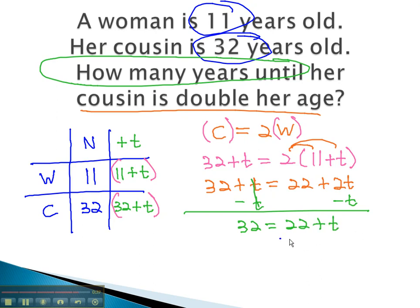Finally, subtracting 22 from both sides, we get 10 equals t. In 10 years, her cousin will be double her age.